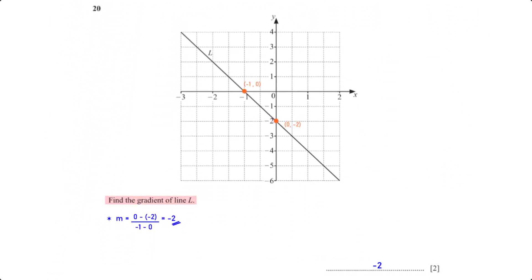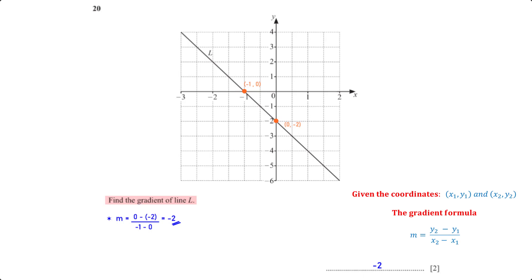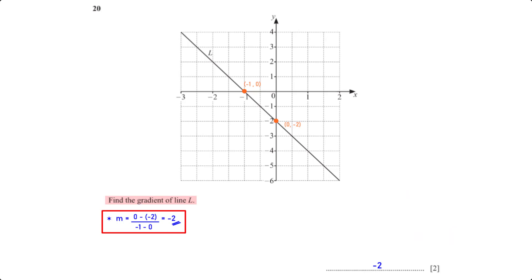Find the gradient of line L. We pick two points on line L and apply the gradient formula: (0 − (−2)) ÷ (−1 − 0), which equals −2.